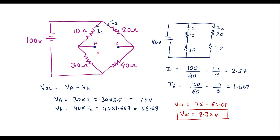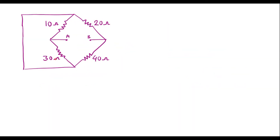After calculating VOC — because in maximum power transfer theorem we first bring the circuit to Thevenin's equivalent circuit — the next step is to find the equivalent resistance between terminal A and B, making the 100-volt voltage source a short circuit. We will call it RAB; we need to find RAB.